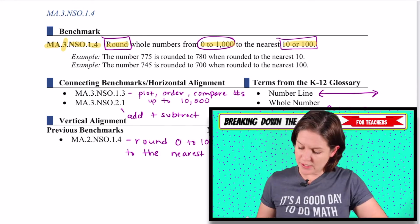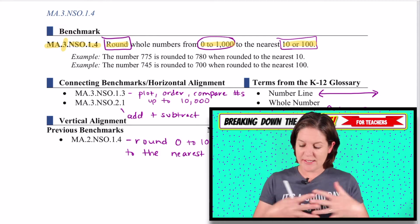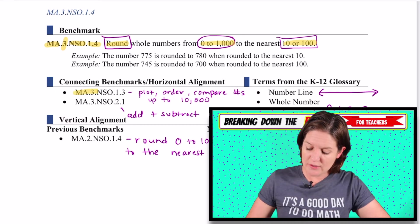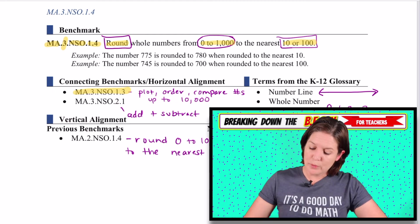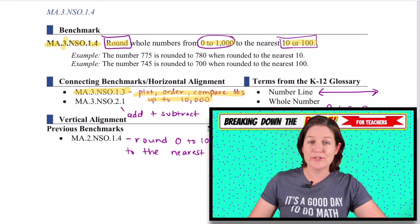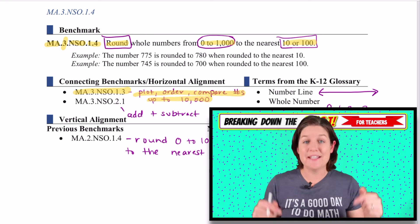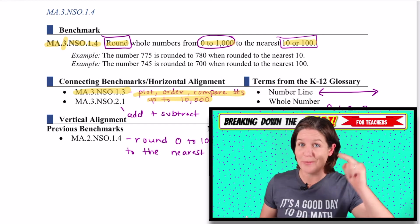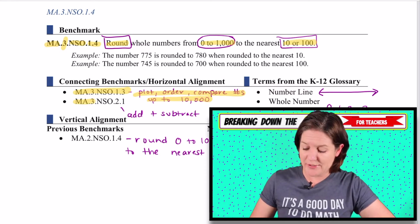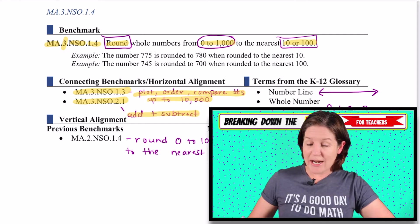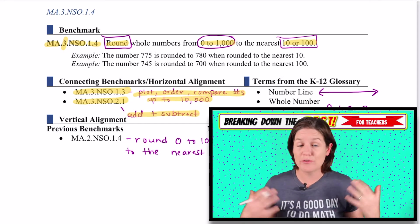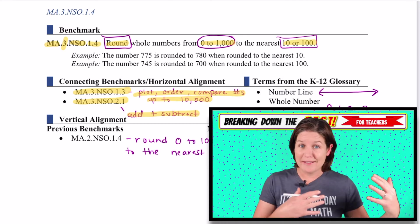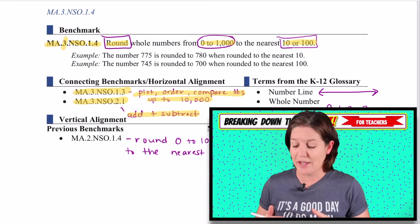You can take a look at the examples up there, but what does this standard connect to in other third grade standards? It connects to the previous standard, which is NSO dot 1.3, which is where we're plotting, ordering, and comparing numbers — because number lines are going to be key for this standard. So everything they worked on with plotting numbers will definitely help. Another connecting benchmark would be NSO dot 2.1, adding and subtracting, because the whole point of rounding is to use it as a tool for estimation when estimating sums and differences.